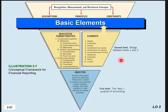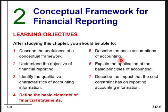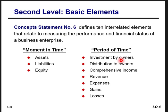Next we define the basic elements of financial statements. Concept Statement number six defines ten interrelated elements that relate to measuring performance and financial status of a business enterprise. At a moment in time: assets, liabilities, and equity — these continue for the existence of the company. Over a period of time: investments by owners, distributions to owners, comprehensive income, revenues, expenses, gains, and losses — these close out every fiscal year.